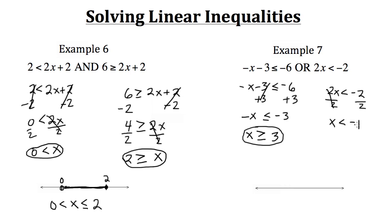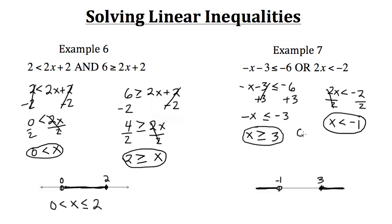For the second inequality: 2x is less than negative 2. Dividing by 2 gives x is less than negative 1. We now have two endpoints: negative 1 and 3. X is less than negative 1 (open circle) or greater than or equal to 3 — the solution goes off in both directions, making this an OR statement.